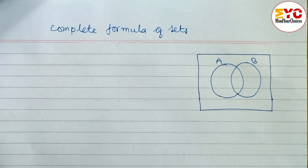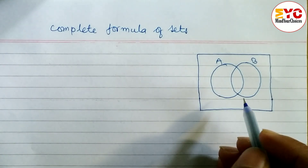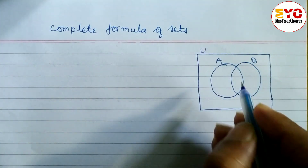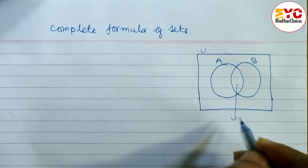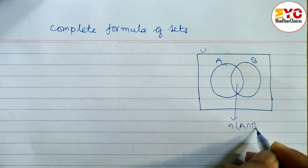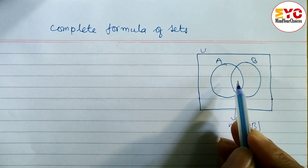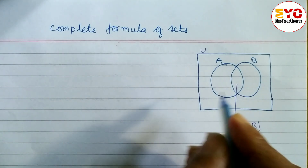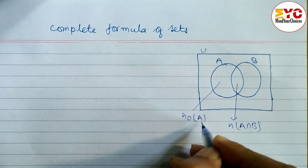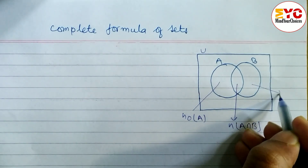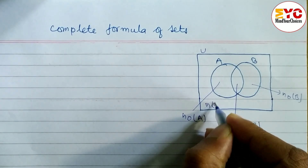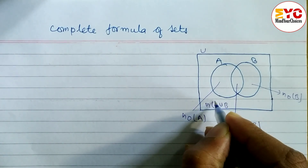In this video we will learn the complete formula of sets. You can see here one set diagram with two subsets A and B of universal set U. The inside part is known as intersection, meaning A intersection B, which is common for A and B. This part is known as only A, and this part is known as only B. The outside part, outside of the set, is known as n(A union B) complement.